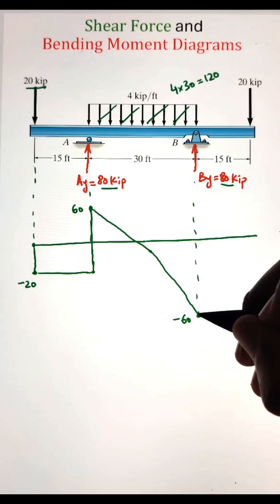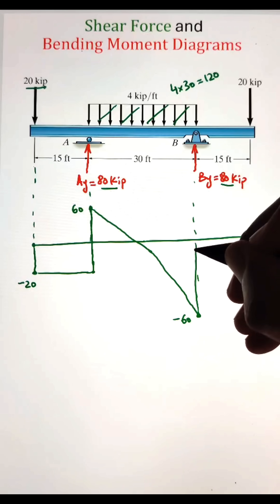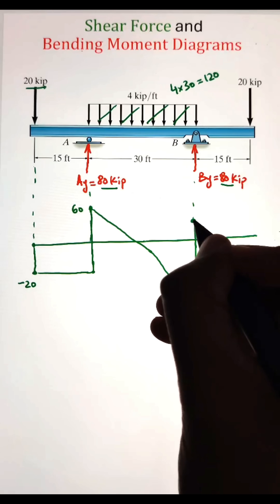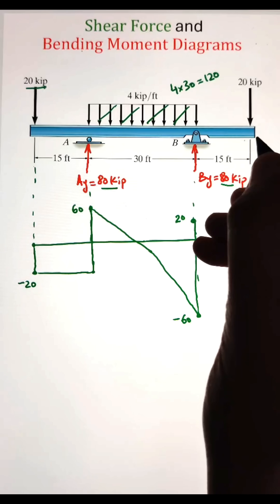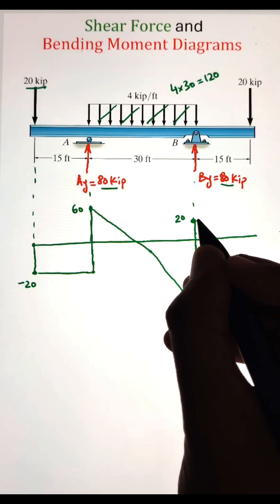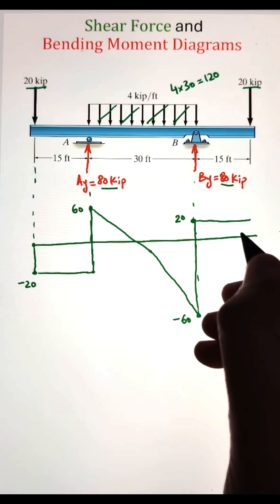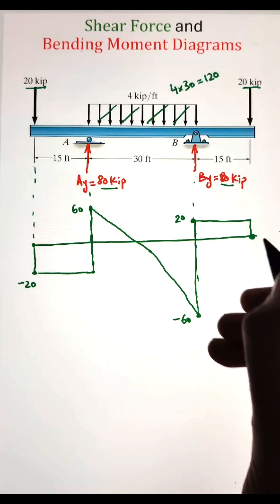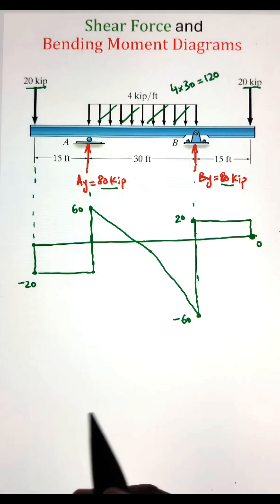After that, we have a point load of 80 kips that will cause a jump up. So from negative 60 plus 80, that leaves it at 20 kips. Next, we have a point load acting at the very end of 20 kips acting downward, which will cause a jump down from 20 to zero.